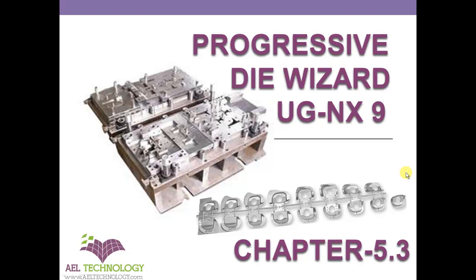We are in chapter 5.3. In this chapter we will be dealing with prebending, formability, one step and universal uniform.